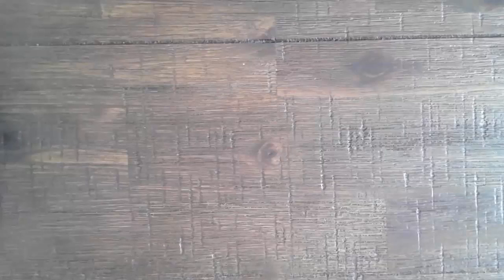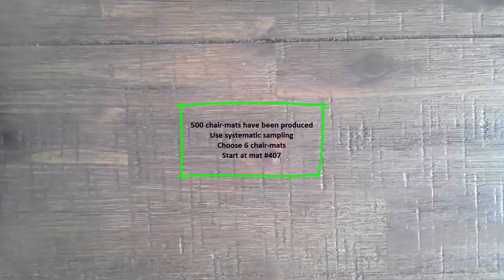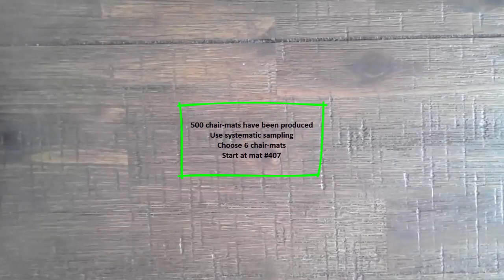In this video we'll be looking at Question 2 from Exercises 4.2 in New QMaths 12a. Question 2 asks us to use systematic sampling to choose 6 plastic office chair mats from a production run of 500, starting from the 407th chair mat.